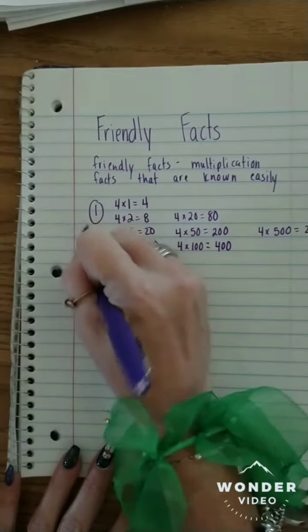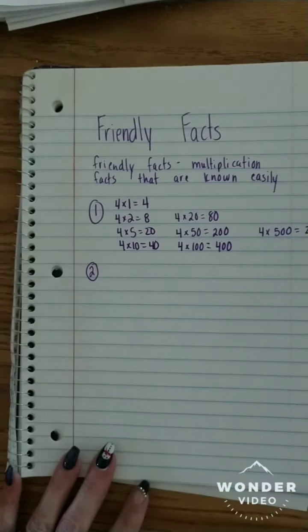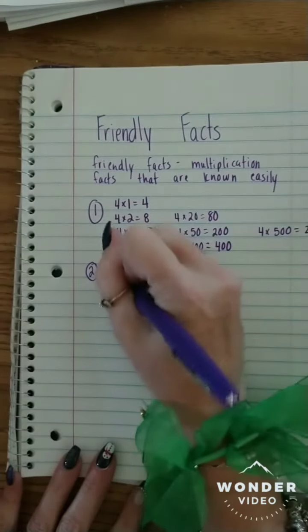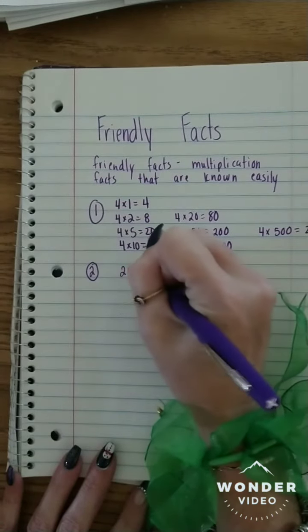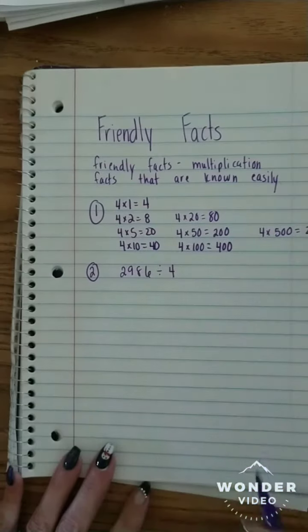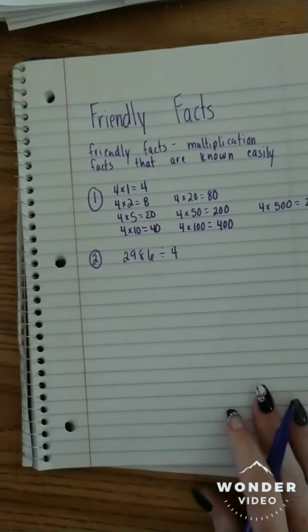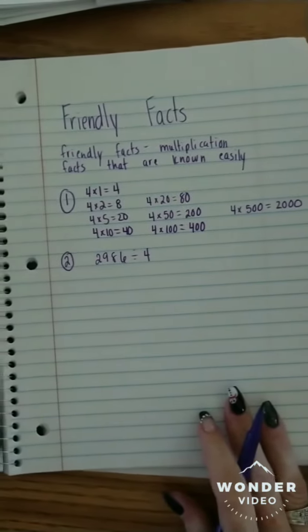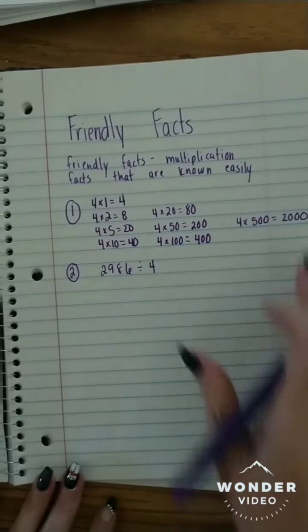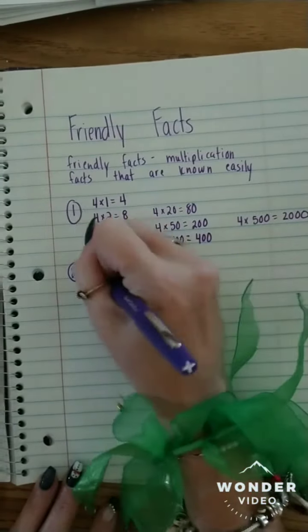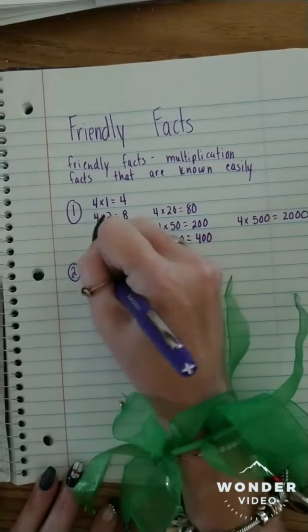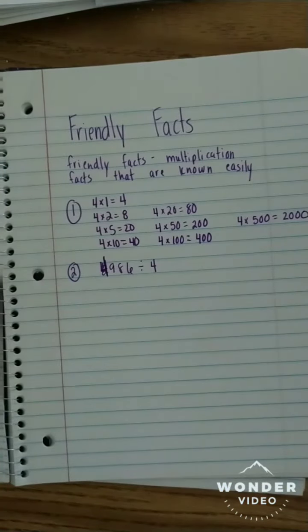Step two is subtracting. So we are going to take our quotient. Let's say it is... let me do 4,000 actually. That way you can see how it works.